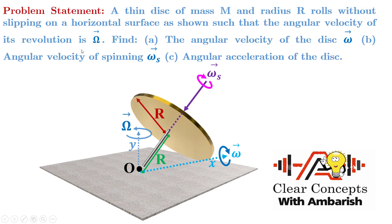Angular velocity of revolution is capital omega vector. Find: Part A — the angular velocity of the disk, omega vector. Part B — angular velocity of spinning, omega_S, and angular acceleration of the disk.